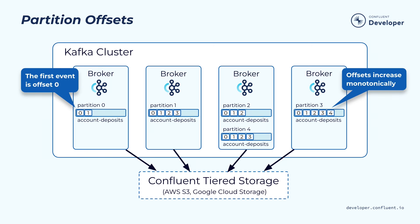Each event within a Kafka topic partition has a unique ID, which we call an offset. This is a monotonically increasing number, and once assigned, it is never reused. All events are stored in the topic partition in offset order and delivered to the consumer in that same order. As we'll see later, this makes it easier for consumers to keep track of where they are.